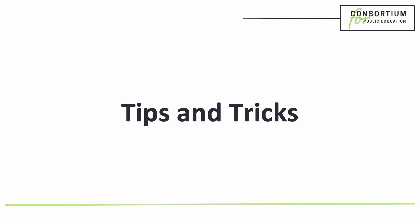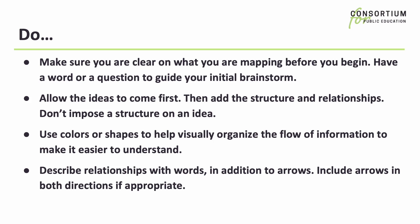Here are a few tips and tricks. Do make sure you are clear on what you are mapping before you begin. Have a word or a question to guide your initial brainstorm session. Do allow the ideas to come first, then add the structure and relationships. Don't impose a structure on an idea before you have all of the associations on the table. Do use colors or shapes to help visually organize the flow of information to make it easier to understand. And do describe relationships with words in addition to arrows. Include arrows in both directions if it's appropriate.